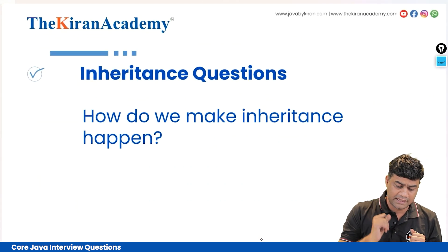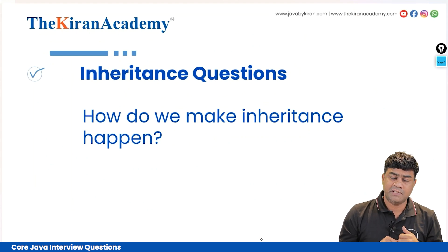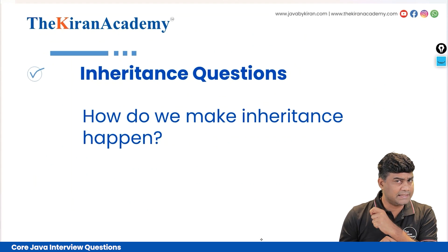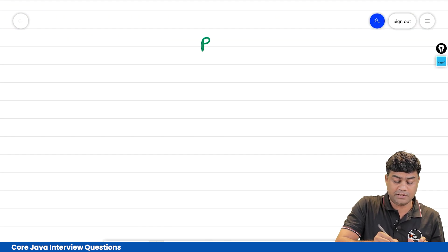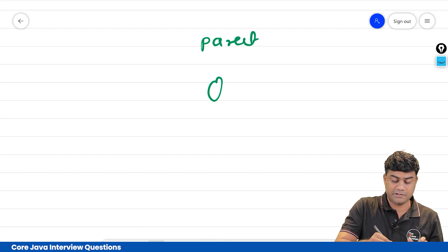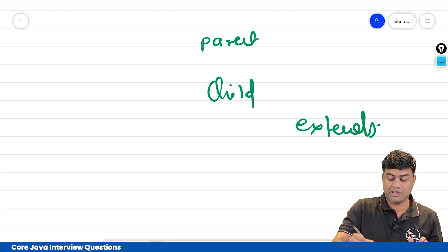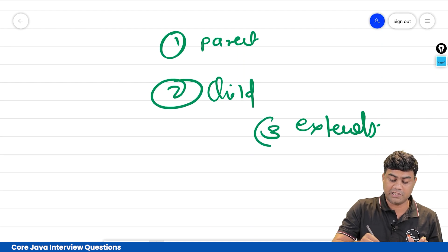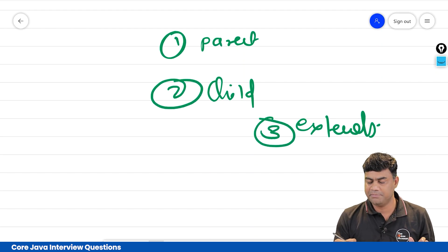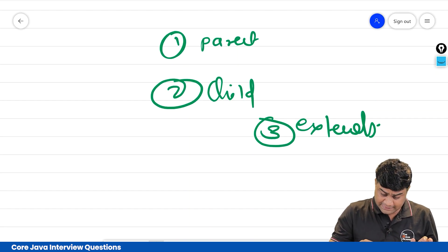Next: how do we make inheritance happen? We need to use the extends keyword. So the things needed are: a parent class, a child class, and the extends keyword. These are the three things needed for implementing inheritance.